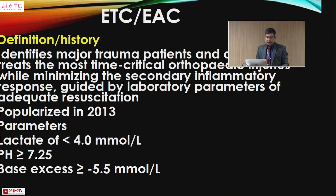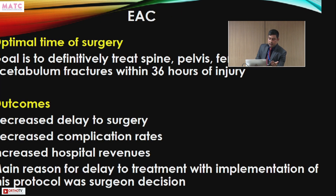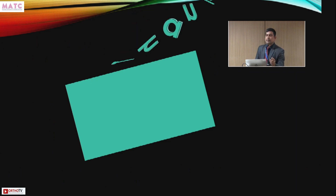For Early Total Care, criteria include: lactate less than 4, pH greater than or equal to 7.25, and base excess up to minus 5 mEq/L — indicating acceptable acidosis for proceeding. The goal is to definitively fix spine, pelvis, femur, and major injuries within 36 hours. Final outcomes should include decreased delay to surgery, decreased complication rates, and increased hospital efficiency. The approach should be surgeon-driven.